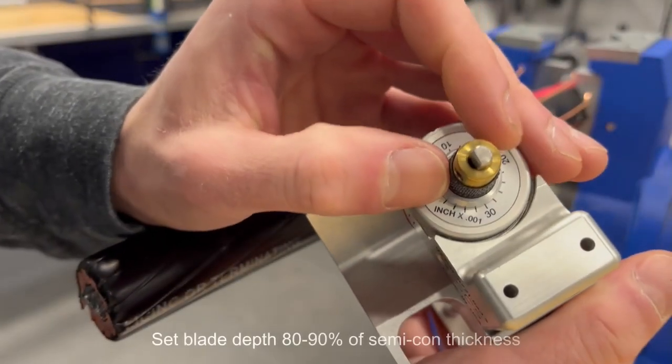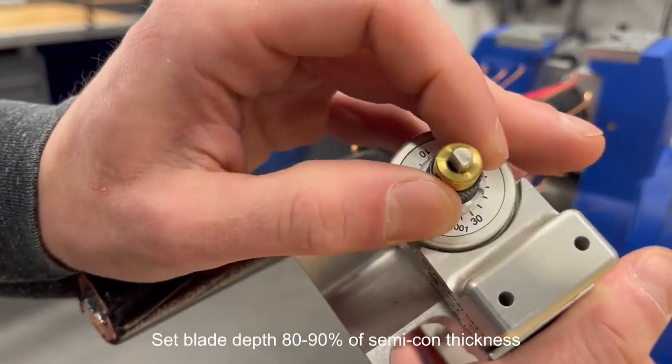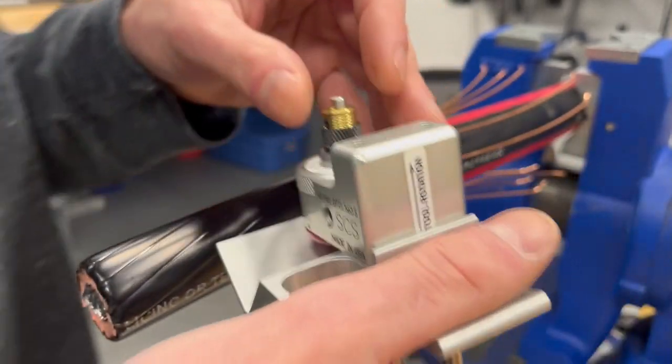Set the blade depth according to the SEMICON thickness. We're setting this one to 26 to avoid damage to the insulation.